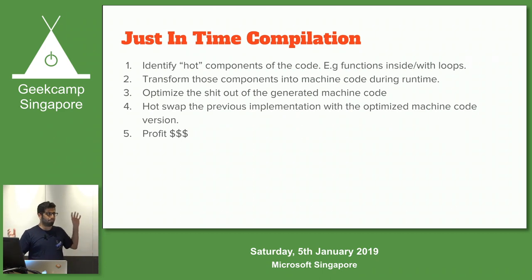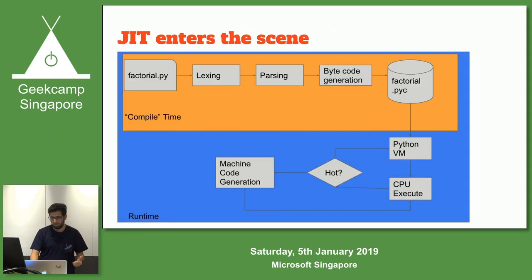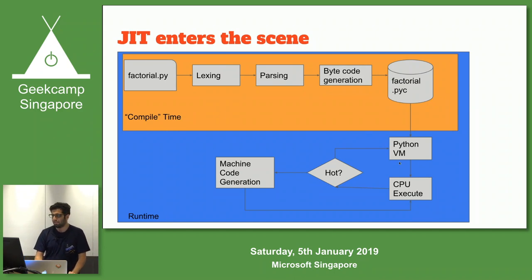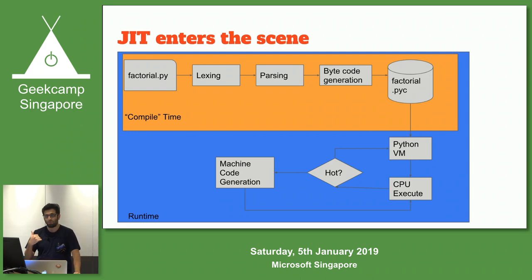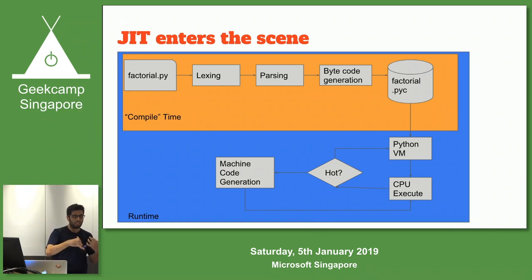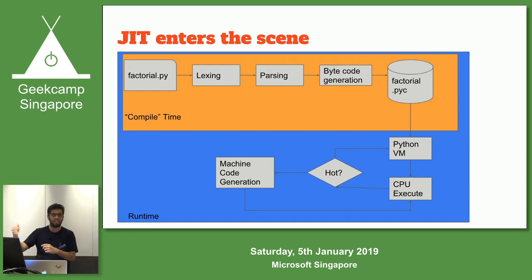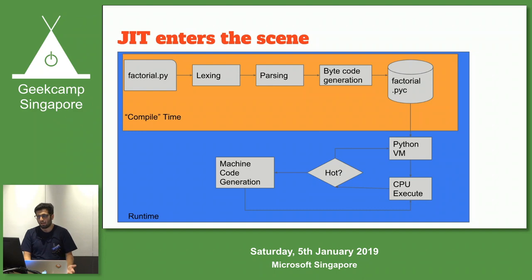JIT means just-in-time compilation. The basic idea is quite simple: we will identify the hot parts of your code - for example, if a function is inside a loop or being used a ton of times. We identify it and say this guy is hot. Then we transform that into machine code at runtime, optimize the hell out of that machine code, and hot swap the implementation from the runtime one with the super optimized one at runtime dynamically. That's the gist of what JIT compilers do.